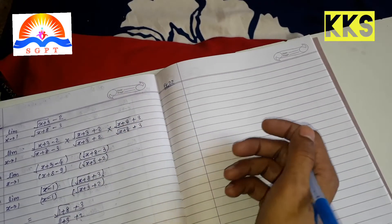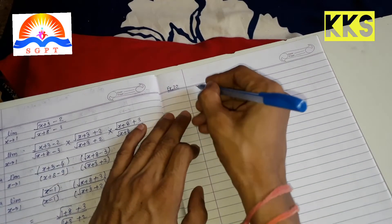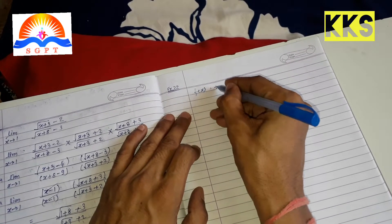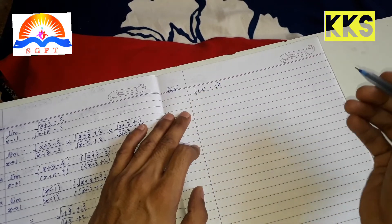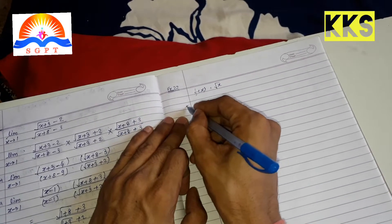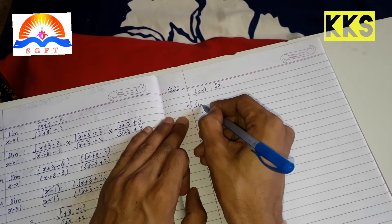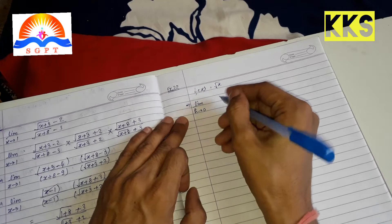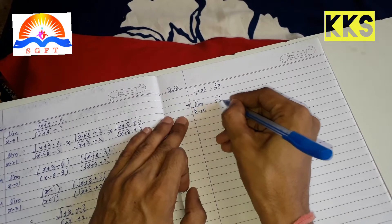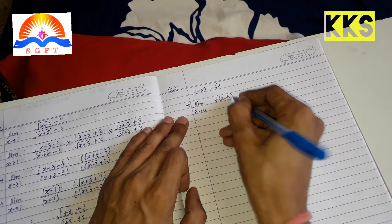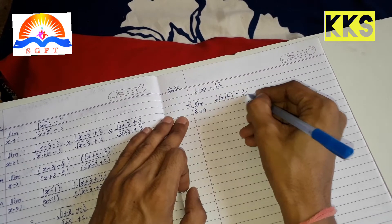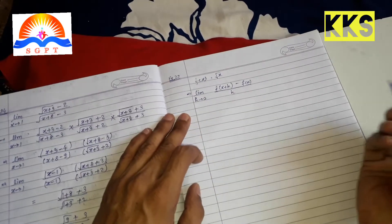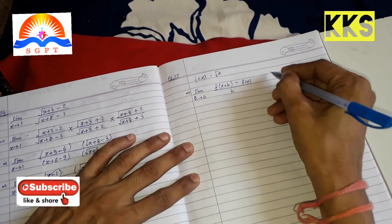इसके लिए हम Example 22 यहां पर ले रहे हैं। Example 22 के अंदर दिया है कि f(x) = √x इस तरह से एक function दिया है। उसके बाद हमको limit दिया है: limit h→0 of [f(x+h) - f(x)] / h — यह हमको function दिया हुआ है, अब इसकी value find out करनी है।